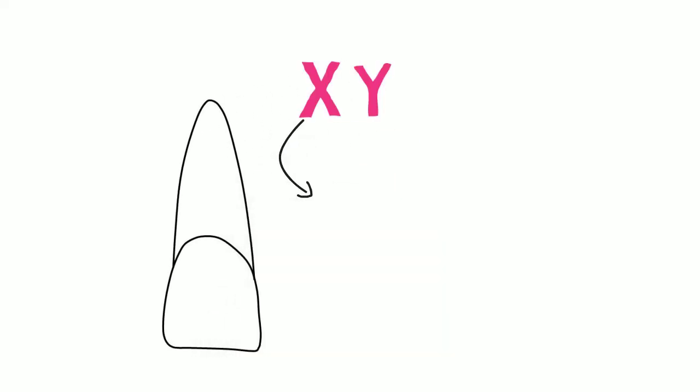The first digit tells us about the set and the quadrant of the tooth. In permanent dentition, numbers 1, 2, 3, 4 depict the four quadrants.